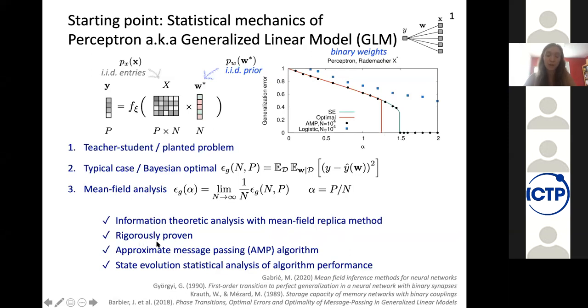On top of this mean field replica computation, we now also have a rigorous mathematical proof that the replica formula is really giving the information theoretic threshold. On top of this information theoretic analysis, we have inference algorithms that are related to those mean field methods and those are the message passing algorithms. For the perceptron, we have the approximate message passing and the performance in the inference, the reconstruction of W on the perceptron are here given as the black dots. And finally, we have the state evolution, which is a statistical analysis of the performance of such algorithms. So in the average case in the limit of infinitely large model, we are able to give a prediction of how the inference algorithm is going to behave.